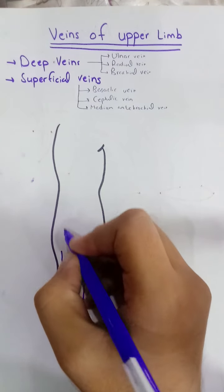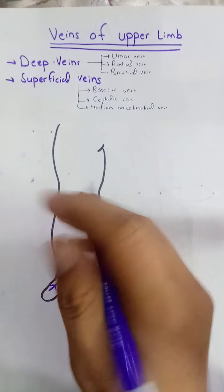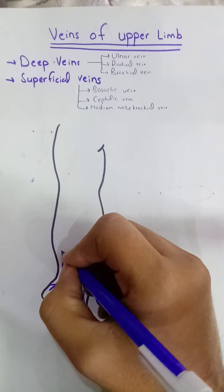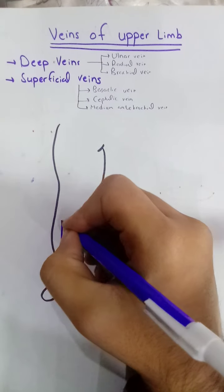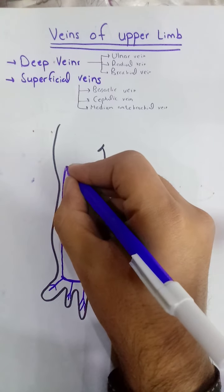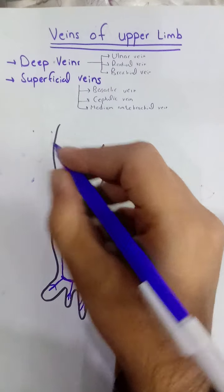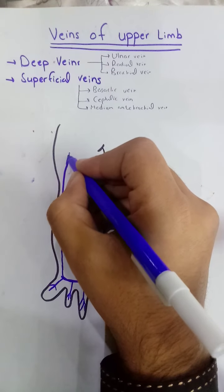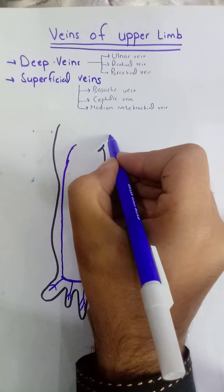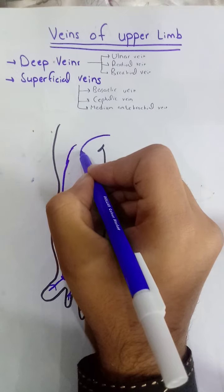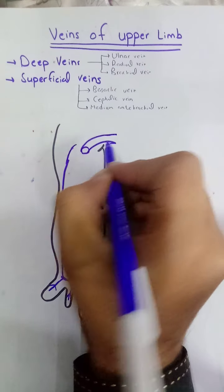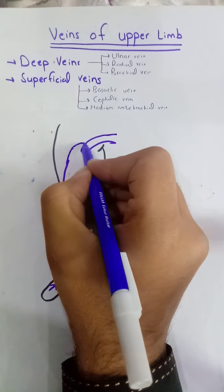The cephalic vein will originate from the lateral part of the deep venous arch and will ascend on the anterolateral aspect of the forearm and the arm, until it drains into the axillary vein at its terminal part.